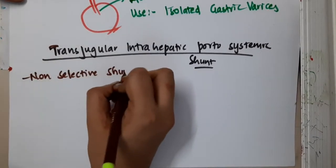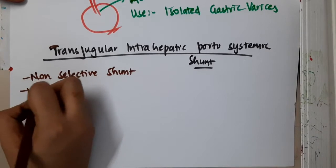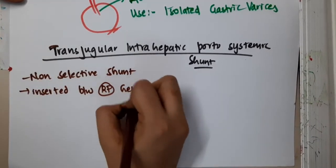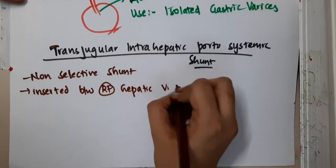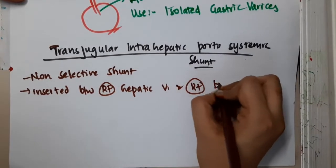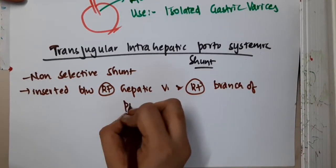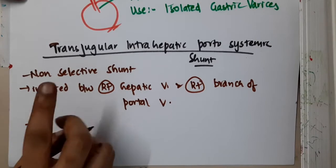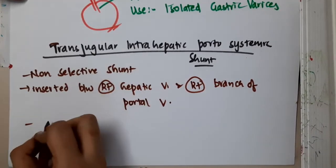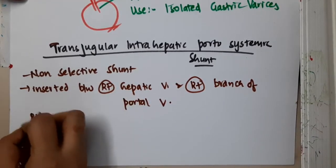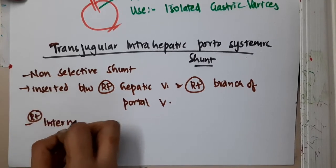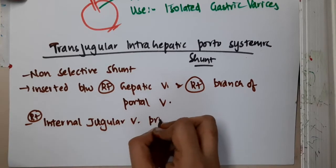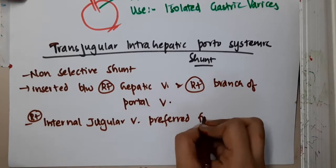It is a non-selective shunt which is inserted between the right hepatic vein and the right branch of the portal vein. First, we will pass the cannula through the internal jugular vein — the right internal jugular vein is mainly preferred for cannulation.